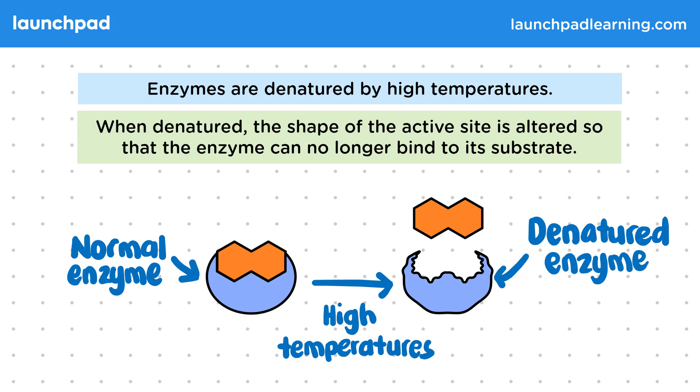This is why it's really important that your body temperature is maintained around the optimum temperature of 37 degrees Celsius.